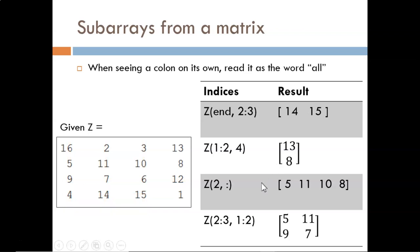In the next example, we see the colon by itself, so this should be read as taking the values in row 2 from all columns. As a result, we obtain this 4 element vector.